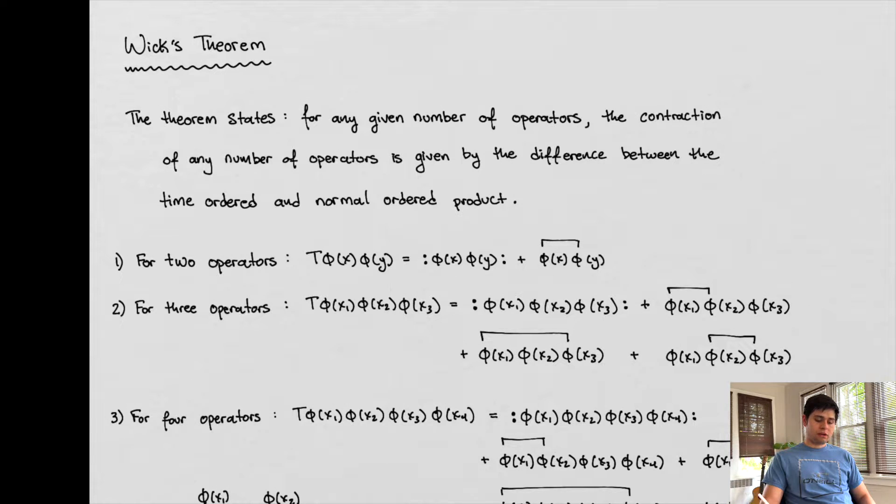All right, hey guys, what's going on? Today we're going to be talking about Wick's Theorem in Quantum Field Theory. Wick's Theorem is a very interesting theorem. It has to do with combinatorics, and it's a way of stating the difference between the time ordering and the normal ordering of a field. The theorem states that for any given number of operators, the contraction of any number of operators is given by the difference between the time ordered and the normal ordered product.